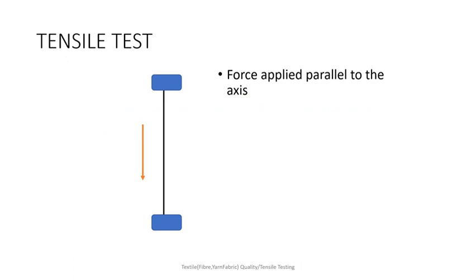In the tensile test, the sample — which may be a fiber, yarn, or fabric — is held between two jaws in any of the tensile testing machines available. The black color represents the fiber, and the force is applied along the axial direction. When force is applied like this, the specimen breaks. This is how the test is done.